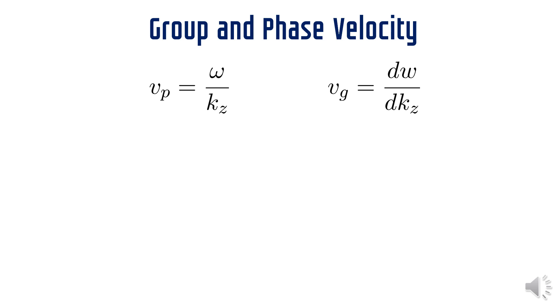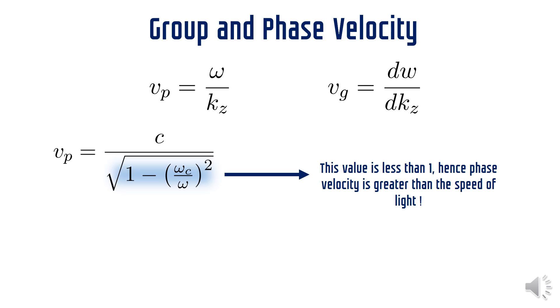Now let us find out the phase and group velocities of EM wave travelling between the parallel plates. First we find the phase velocity of the wave using the standard formula given above, that is vp equals omega by kz. Note that the formula is given by omega by kz and not omega by k because the actual direction of propagation is given by kz.